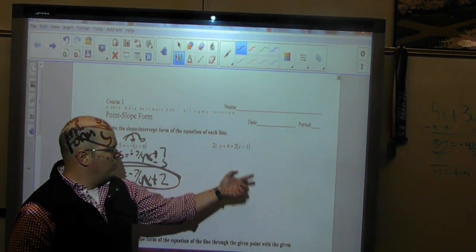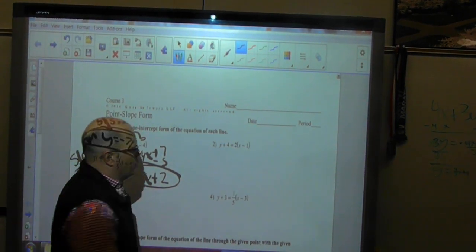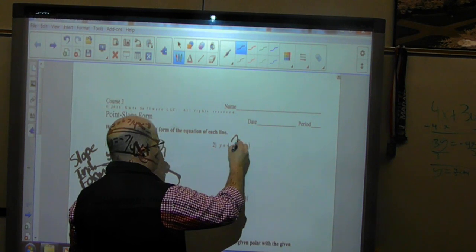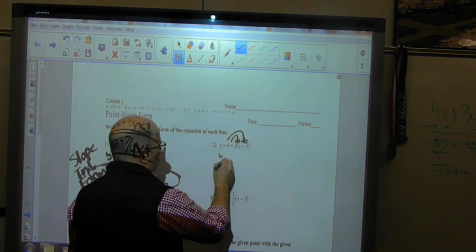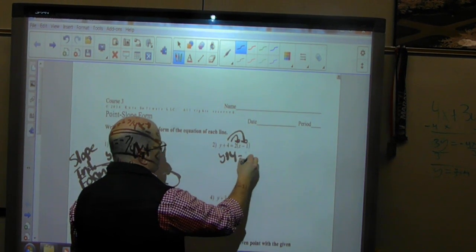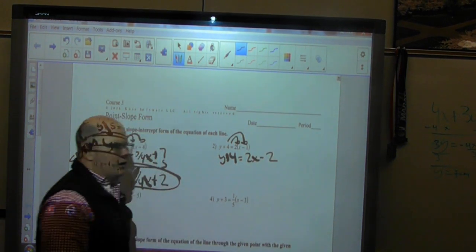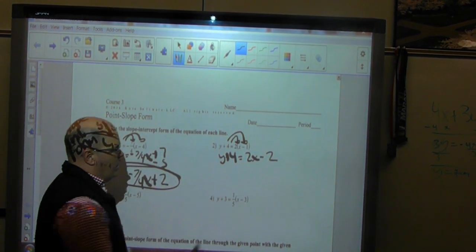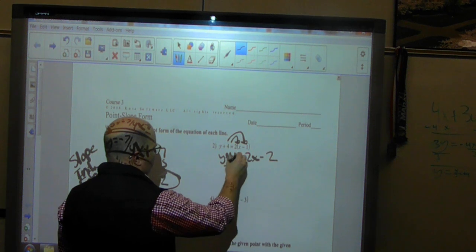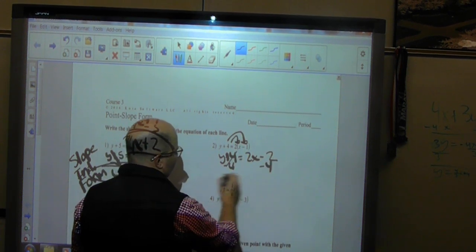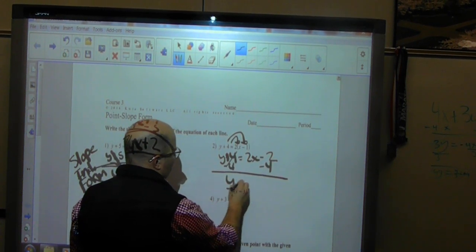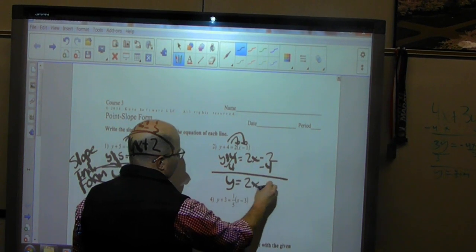So let's take a look at this guy here, y plus 4 equals 2 parentheses x minus 1. So the first thing I do is distribute. So I'm left with y plus 4 is equal to 2x minus 2. So I distributed it, so now I just isolate y. I'm going to isolate y by minusing 4, since I was adding 4. And I'm left with y equals 2x minus 6.